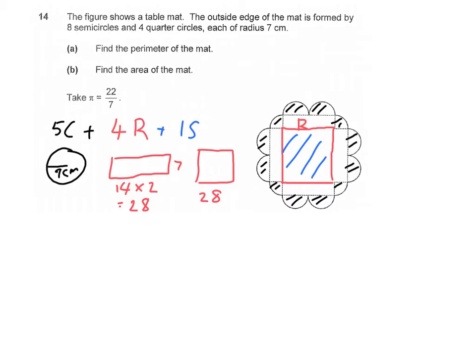Okay, so now let's find the area of the circle. So area of the circle is equal to pi times R times R. So that will give us 22 over 7 times 7 times 7. That will give us 154 cm².